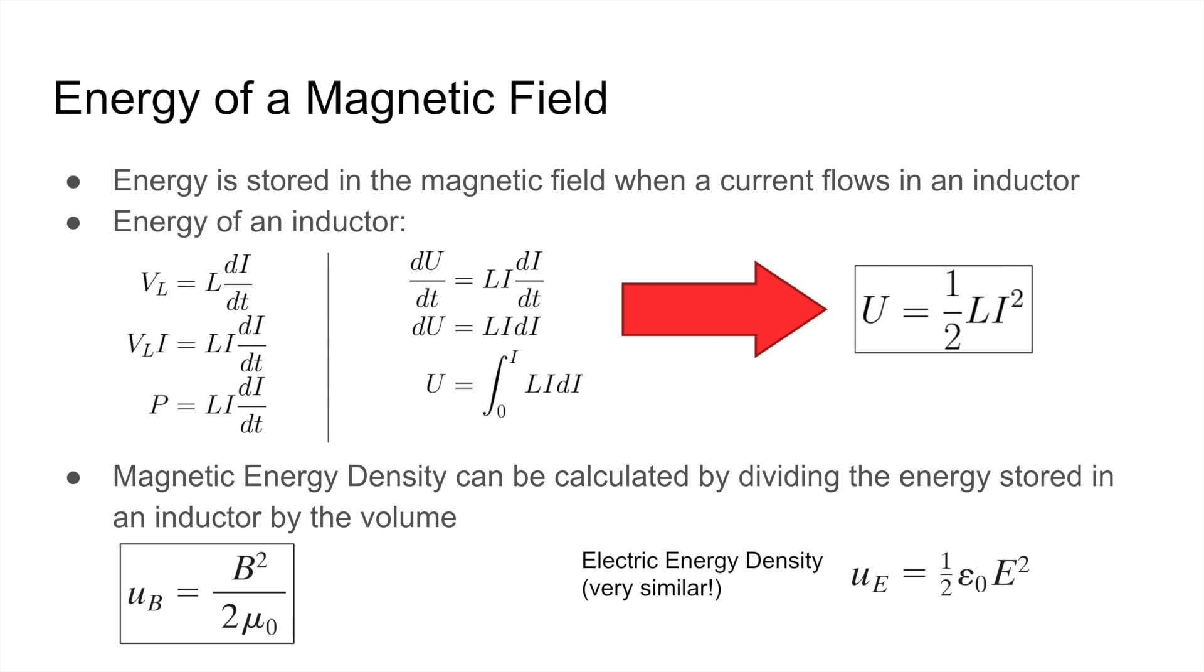The last thing for Chapter 30 is the energy of a magnetic field. So the energy is stored in a magnetic field when a current flows in an inductor. So here's how we can derive the energy stored in an inductor. We start with V, which is the potential difference across an inductor, is equal to the inductance times dI over dt.